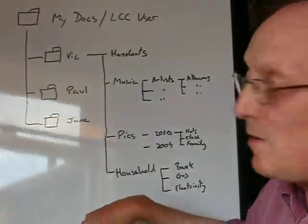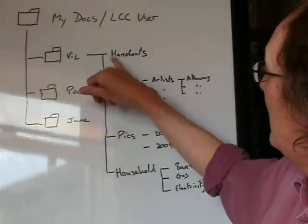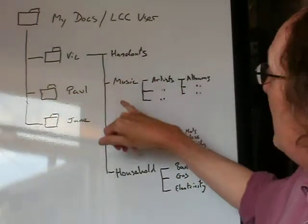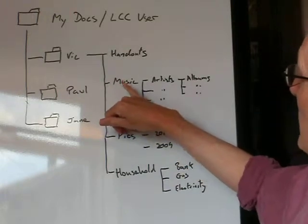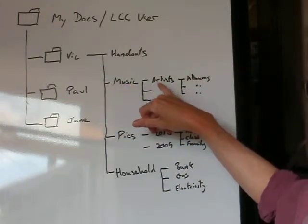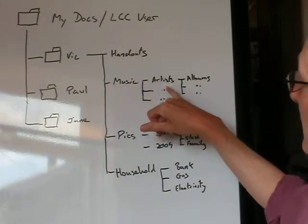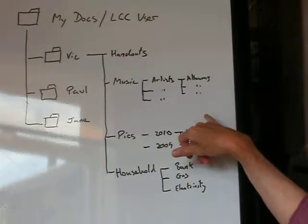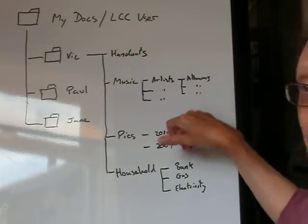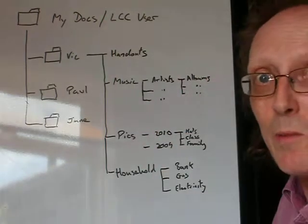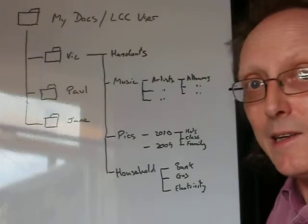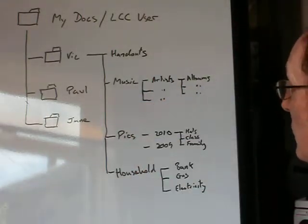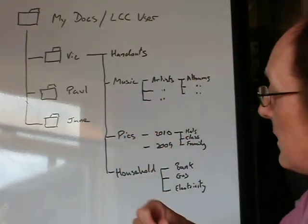So let's just look at what I've done here. I've got a directory with handouts for the work I'm doing, and music. I've also got directories with the different artists and bands that I like, and then there are albums within those, so I can always find a particular album very quickly by going through this directory structure.